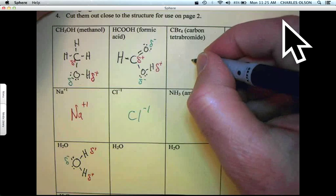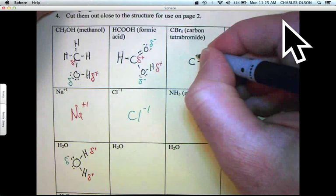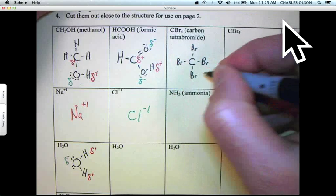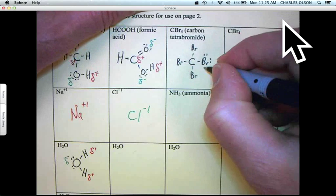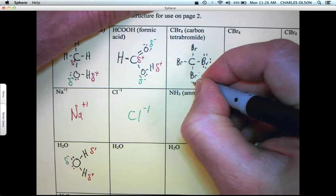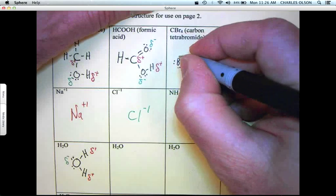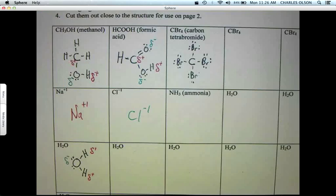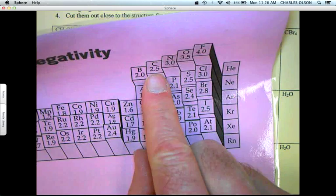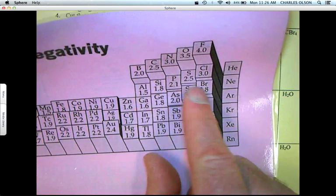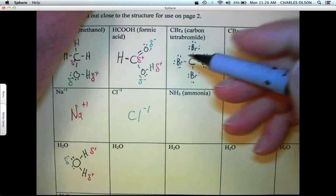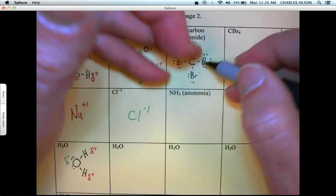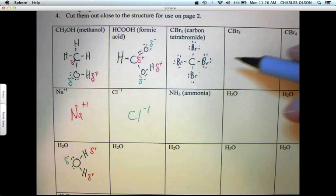Carbon tetrabromide. We've got carbon attached to four bromines. Bromine, being a halogen, does have three lone pairs. Now let's see what the polarity is of this bond. Carbon: electronegativity of 2.5, bromine: 2.8. So the difference is 0.3. That is a small difference. It is nonpolar. Since these bonds are all nonpolar, it is a nonpolar molecule with no partial positive or partial negative charges.